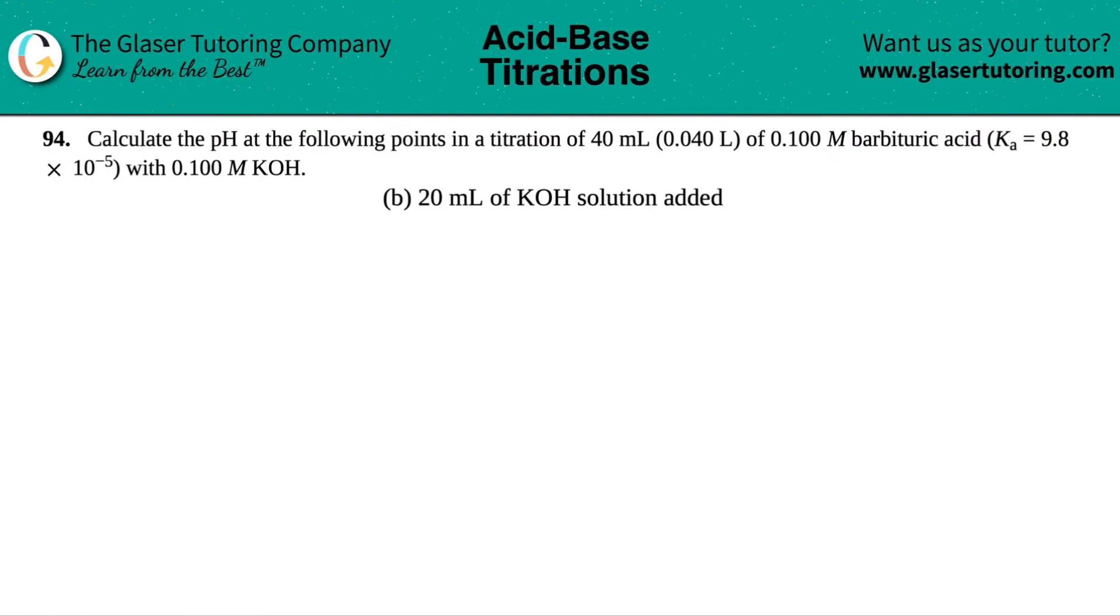Number 94, calculate the pH at the following points in a titration of 40 mL or 0.040 liters of 0.100 molar barbituric acid, Ka equals 9.8 times 10 to the negative fifth, and we're titrating that with 0.100 molar potassium hydroxide.